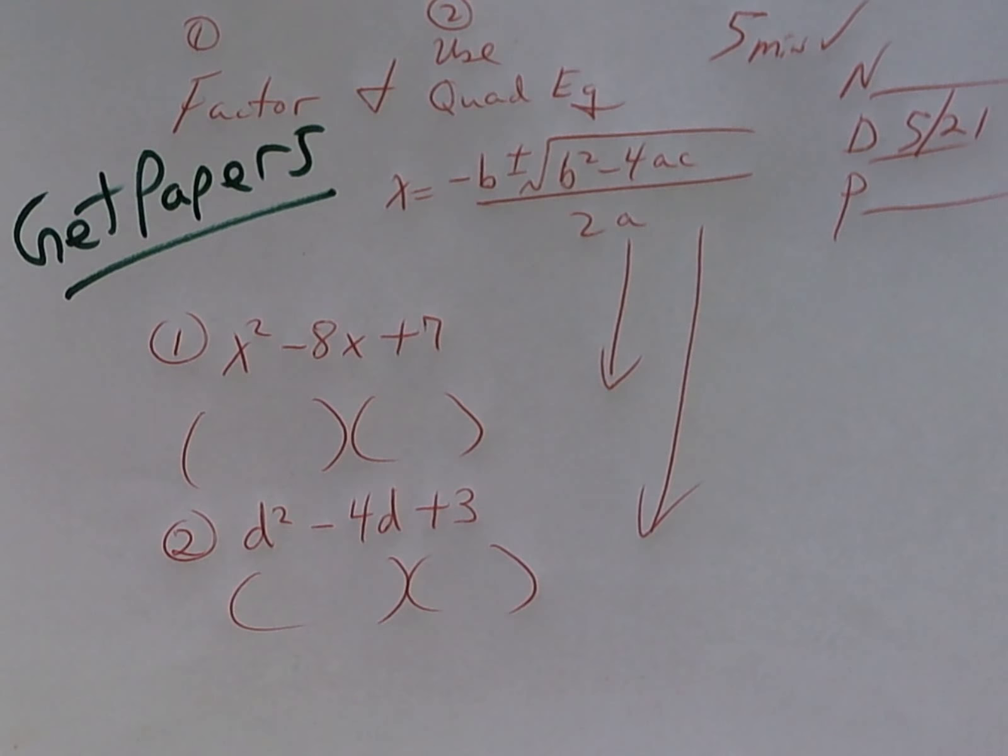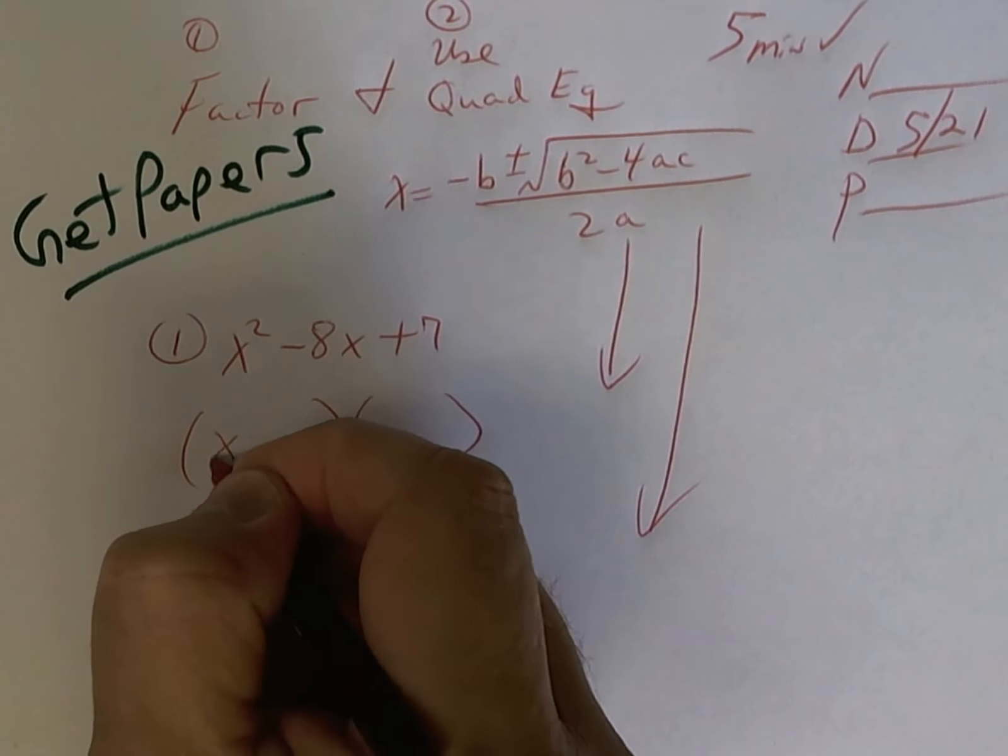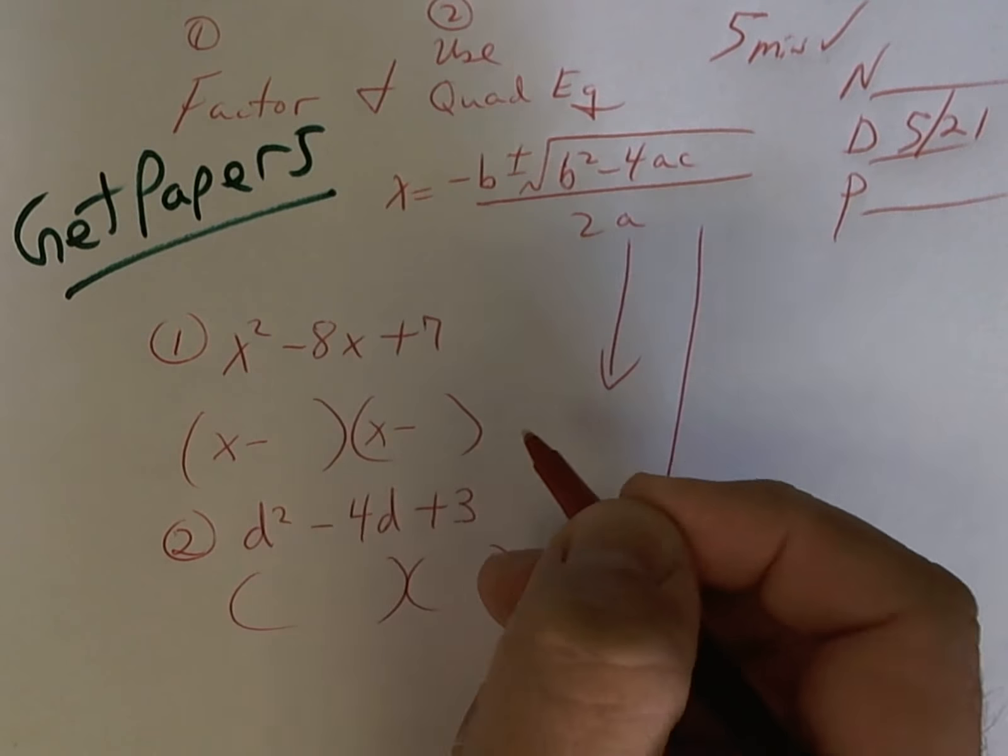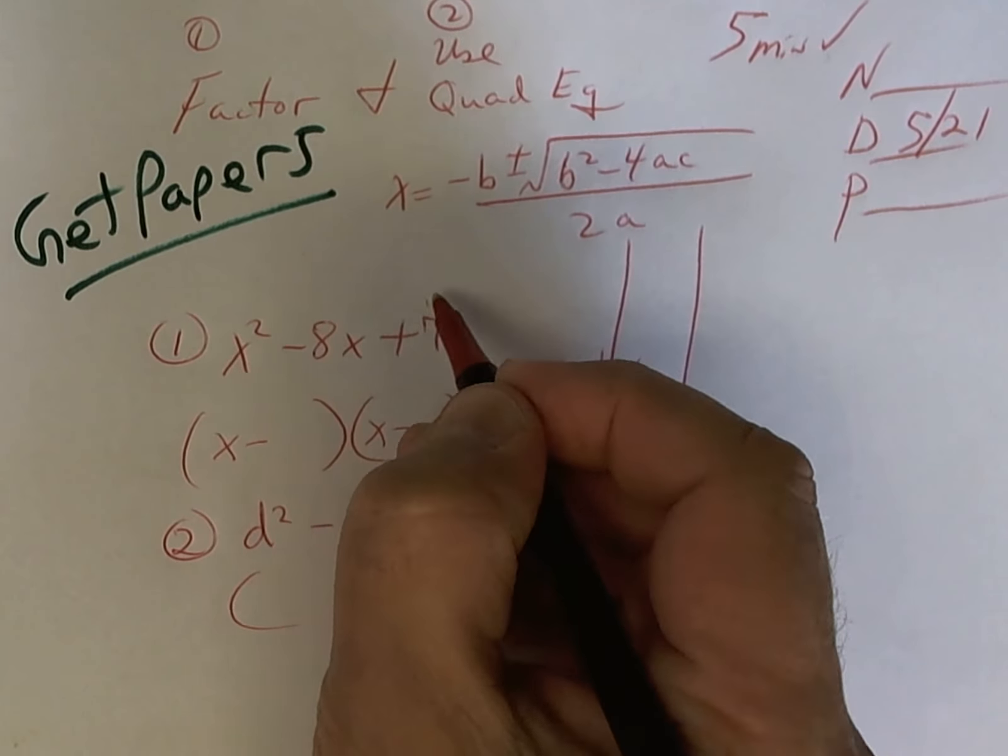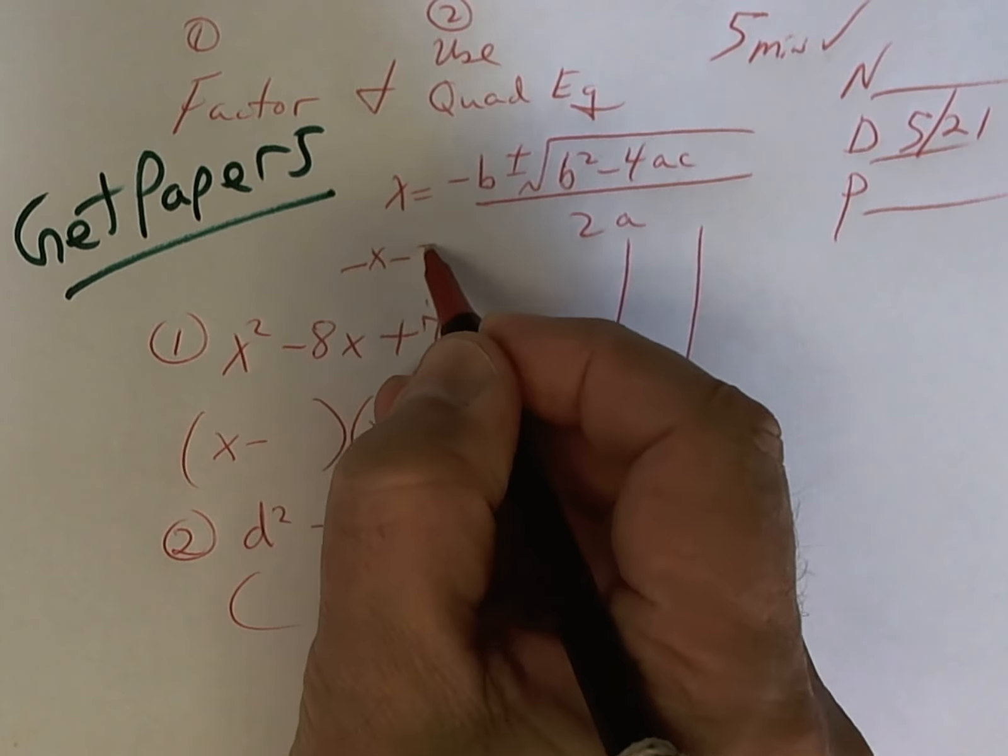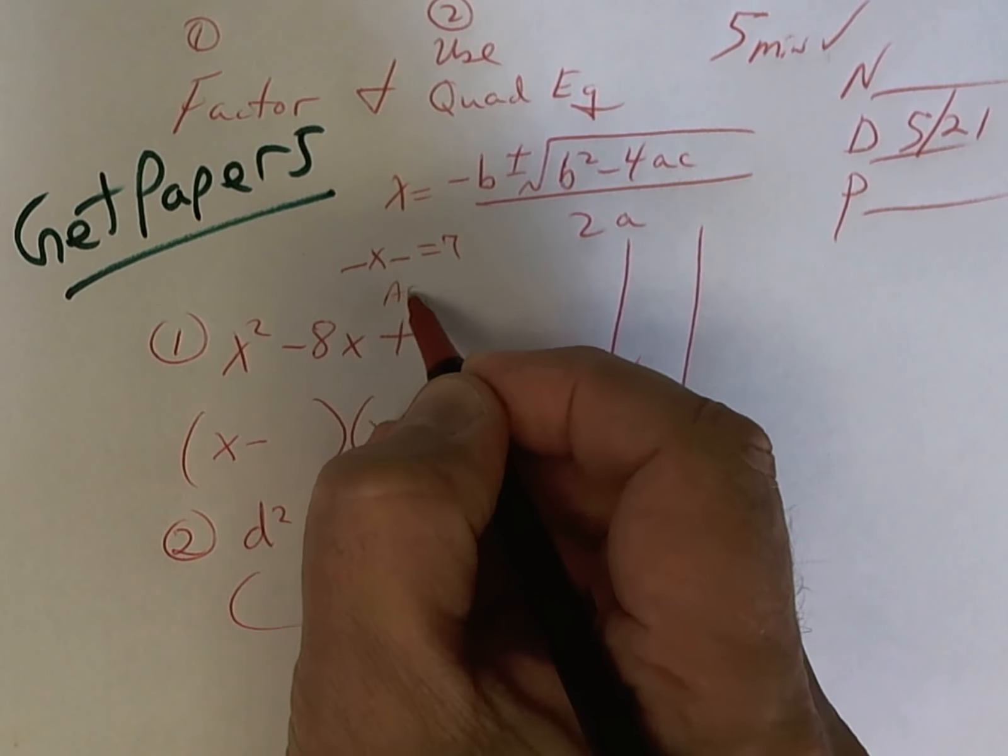All right, look up here and listen. Even if you're not finished, I want you to look. So first of all, a negative and a positive, according to the chart, is going to give you two negatives. Two negatives means you're going to add. So what times what is seven? That's going to add to give you the middle one, which is eight.